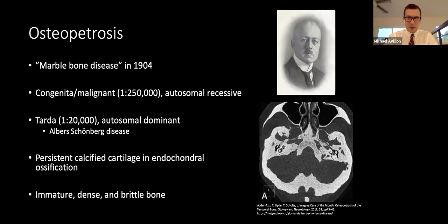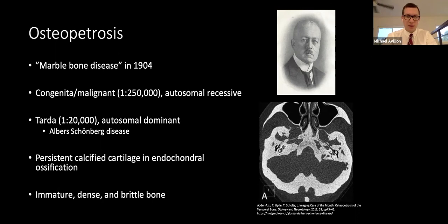Osteopetrosis was first reported as marble bone disease in 1904 by radiologist and gynecologist Albert Schönberg. It is a group of inheritable metabolic bone disorders characterized by dense sclerosis and faulty remodeling due to osteoclast mutations. This leads to accumulation of partially resorbed bone, dense sclerosis, and mainly affects the axial skeleton and bones formed by endochondral ossification, including long bones.